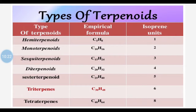Now we will see some important types — this is also the classification of terpenoids. The classification is based on the number of isoprene units present. The chemical formula of one isoprene unit is C5H8. Depending upon the number of isoprene units present, terpenoids are classified into various classes. The first class is hemiterpene or hemiterpenoids, with chemical formula C5H8 because only one isoprene unit is present.